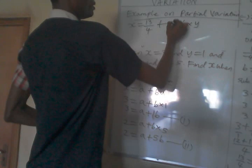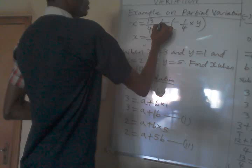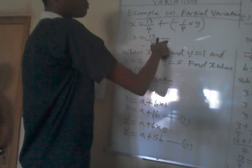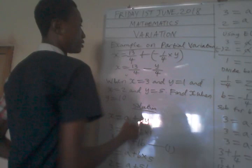Now we work this one. This is the same as x equals 13 over 4 minus. Plus times minus will give us minus y over 4.